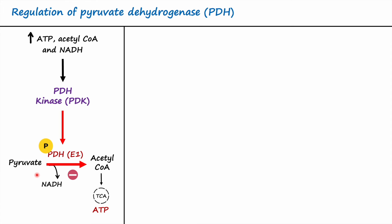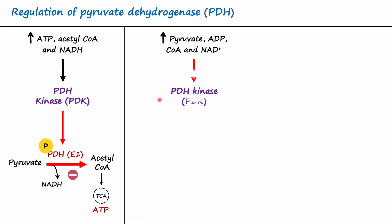Increased pyruvate level, increased ADP level — which is an indicator of energy-deficient cells — as well as increased coenzyme A and NAD+ levels can inhibit the enzyme pyruvate dehydrogenase kinase. Since PDK is inactivated, it is no longer able to phosphorylate pyruvate dehydrogenase. As a result, the reaction is activated: pyruvate is converted into acetyl-CoA, which enters the TCA cycle to synthesize ATP, providing energy to cells that were deficient.